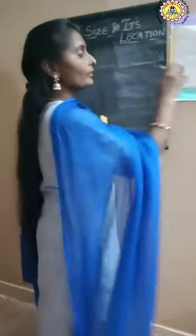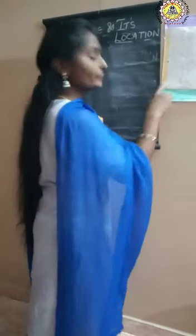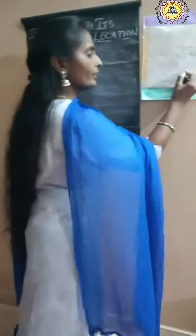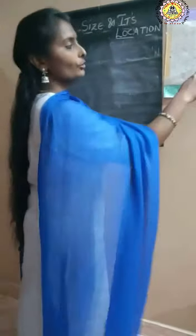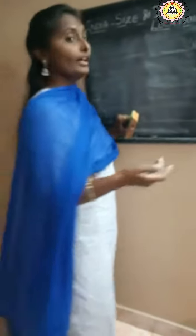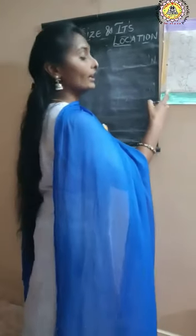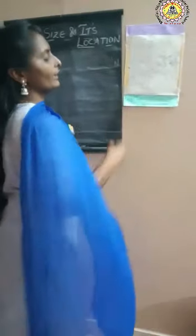India is bounded by water on three sides, which is why it is called a peninsula. A peninsula is a landmass bounded by water on three sides. On the east of India we have the Bay of Bengal, on the west we have the Arabian Sea, and on the south we have the Indian Ocean. The island group in the Bay of Bengal is the Andaman and Nicobar Islands, and the island group in the Arabian Sea is the Lakshadweep Islands.